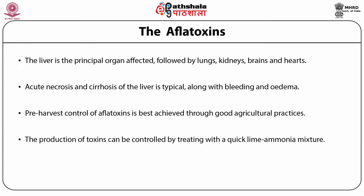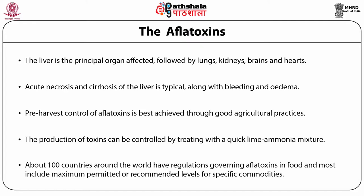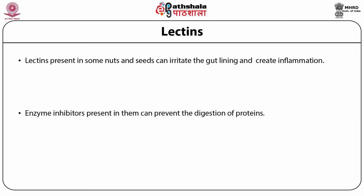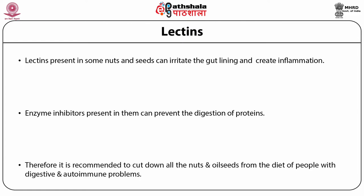The production of toxins can be controlled by treating with a quick-lime ammonia mixture. About 100 countries around the world have regulations governing aflatoxins in food. Lectins are also present in some nuts and seeds and can irritate the gut lining and even create inflammation. Enzyme inhibitors present in them can prevent the digestion of proteins. Therefore, it is now recommended to cut down all nuts and oil seeds from the diet of people with digestive and autoimmune problems.